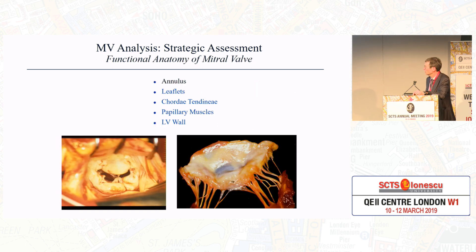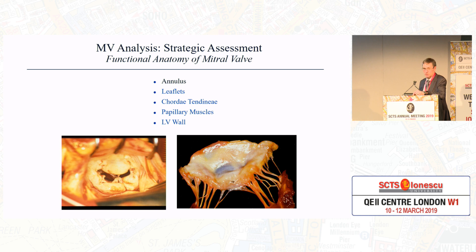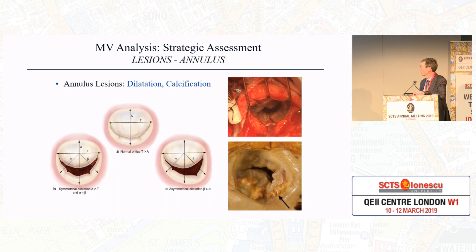When we look at the functional anatomy of the mitral valve, there are five areas we need to focus on: the annulus, leaflets, chordae tendineae, papillary muscles, and the left ventricular wall.